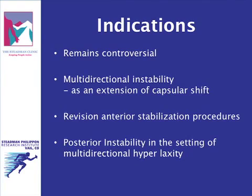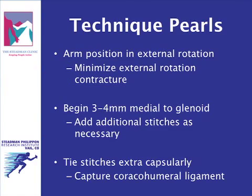Biomechanical data most reproducibly supports a decrease in anterior glenohumeral translation after arthroscopic rotator interval closure. Its value in decreasing posterior or inferior glenohumeral translation is less well established. The benefit of rotator interval closure should be weighed against its clinically and biomechanically described potential to limit external rotation.